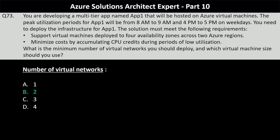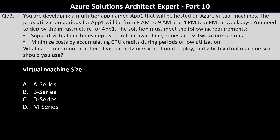For the virtual machine size, the options are A-Series, B-Series, D-Series, and M-Series. The B-Series VM size is the best choice because of the ability to bank CPU credits during periods of low utilization. B-Series are burstable VMs that accumulate CPU credits during idle times and then consume those credits during periods of high CPU usage.